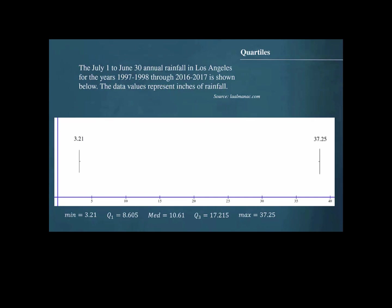Next, we draw another vertical line above the horizontal axis at the maximum value of 37.25 and also label that. Now, we draw a box with vertical lines that set the outer boundaries at the first quartile of 8.605 and the third quartile of 17.215.